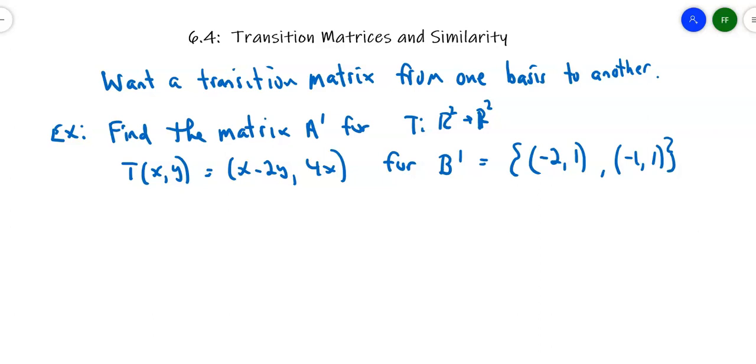Transition matrices and similarity. This section is laying the foundation for the types of things we're going to do in Chapter 7 with eigenvalues and eigenvectors, but the whole foundation of that is similar matrices. We want to find a transition matrix from one basis to another basis, going from the standard ordered basis to a different basis, or from two non-standard bases.